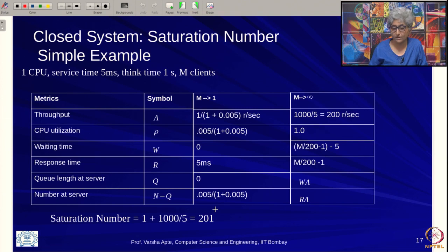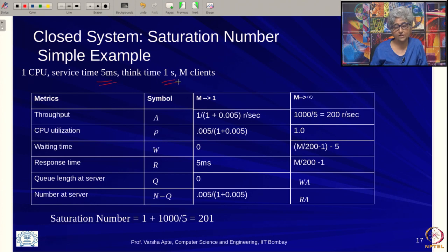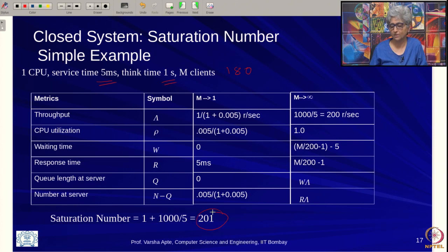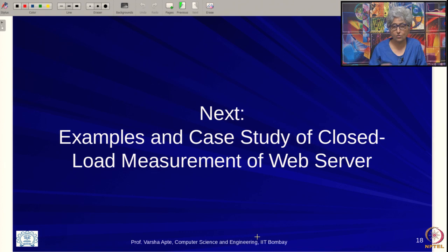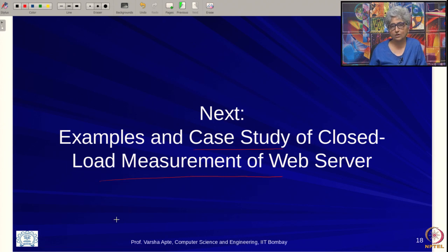As a concrete example from earlier: service time τ = 5 ms, think time h = 1 second = 1000 ms. The saturation number M* = 1 + 1000/5 = 201 users. The earlier example used 180 clients, which is just below the saturation number. This brings us to the close of the basic theory for closed queuing systems. In the next lecture we will look at more examples and return to the web server case study, this time with closed load measurements.